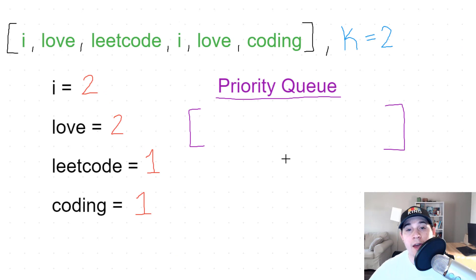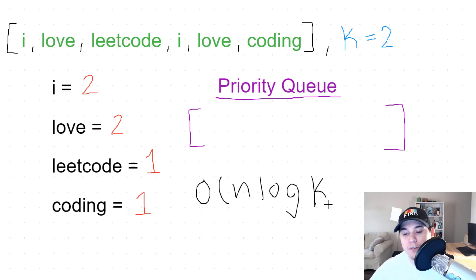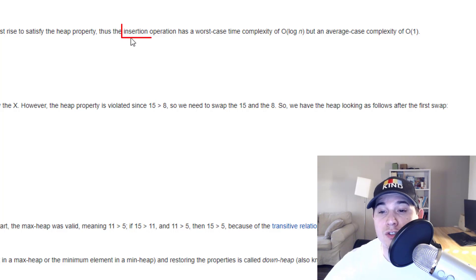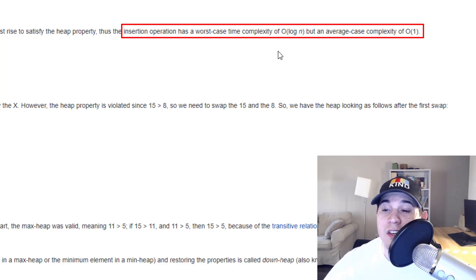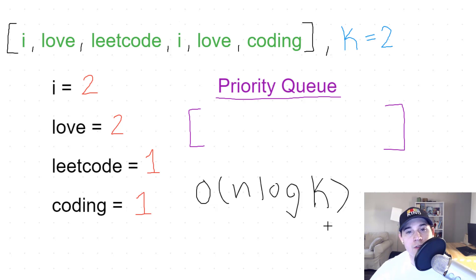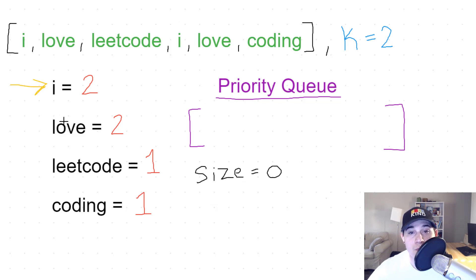Now we've initialized our priority queue and we loop over all of our frequencies adding strings into it. Keep in mind we have to solve this in O(n log k) time. Since heap insertion has a worst-case of O(log n), we need to ensure we only ever have k elements in our priority queue to keep insertion down to O(log k). We add 'i' first — it goes to the top since the queue is empty — and the queue size is now one. Since one is not greater than k (which is two), we don't need to pull.